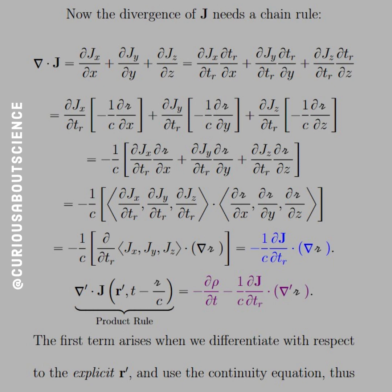And then we also see here that if we did the prime coordinates, we have prime divergence of the vector J, which is a function of R prime in the retarded time. And that's equal to negative dR dt minus 1 over C partial J over TR dot the prime derivative prime gradient of script R. So the first term arises when we differentiate with respect to the explicit script R, because we know from the continuity equation that the negative divergence gives us dR dt, so put the negative over, good there. And that's where we see the first term. And thus, let's move on.